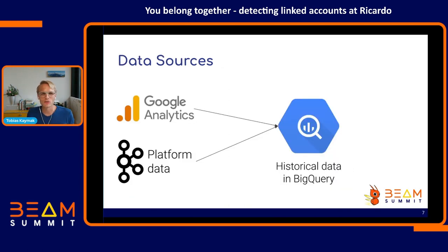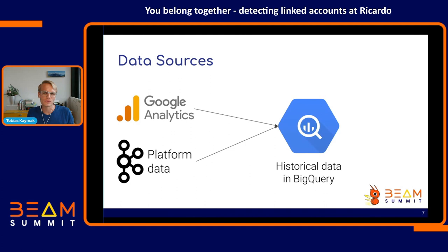To answer this question, we have the following data sources available. Our production data comes from Apache Kafka, being fed into BigQuery by a Flink cluster running Apache Beam pipelines. We also have Google Analytics data going into our BigQuery datasets. We use BigQuery as our main data warehouse at Ricardo to store all information in one place and analyze it. Google Analytics can help you identify if two accounts share the same session ID, so you can know if a user logged out and logged in with two different accounts on the same device.